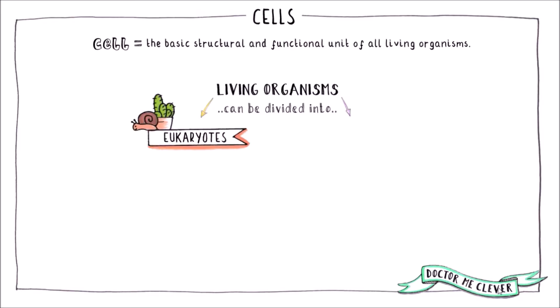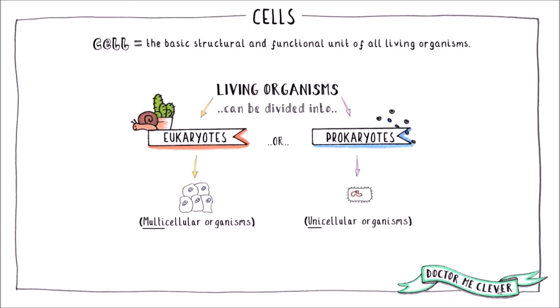The first group of organisms are called eukaryotes. The second group of organisms are called prokaryotes. Eukaryotes are made up of more than one cell, they are said to be multicellular organisms. And prokaryotes are made up of a single cell, they are said to be unicellular organisms.